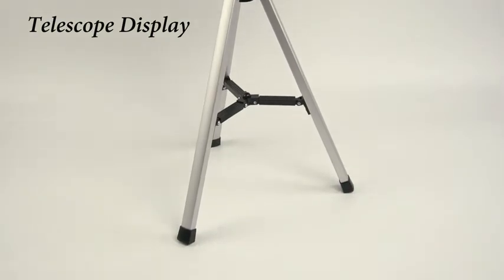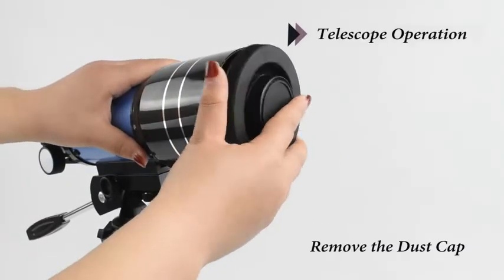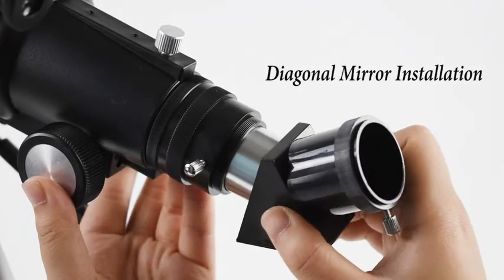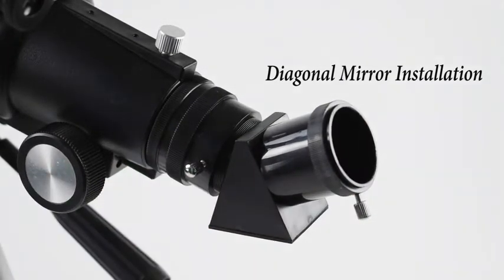After installing the telescope, remove the dust covers at both ends of the diagonal mirror, eyepiece, finder scope, and the telescope main tube. Insert the diagonal mirror into the end of the telescope tube.